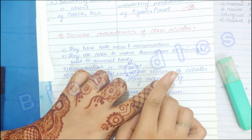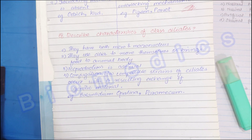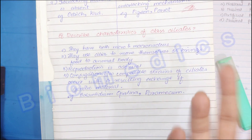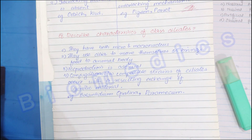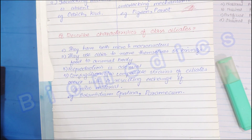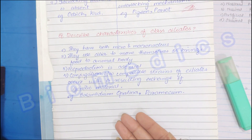Remember which class belongs to which phylum — this is the most important thing for MCQs and short questions. Exam questions often give a class and ask for examples, or give examples and ask for the class. Prepare all examples and classes from the book and write them together in one place for easy revision.